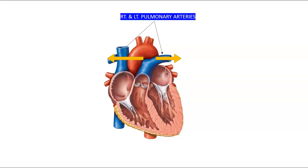This is the only place in the body — in the heart — where the arteries and veins are flip-flopped: the arteries carry deoxygenated blood and the veins carry oxygenated blood.